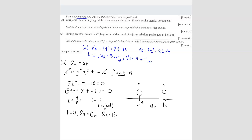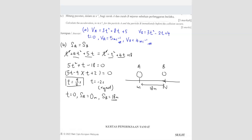Substituting T equals 9/5 into the first displacement formula gives 27.792 meters. Since both displacements are equal at collision, both particles meet at 27.792 meters. The question asks how much distance each particle traveled.